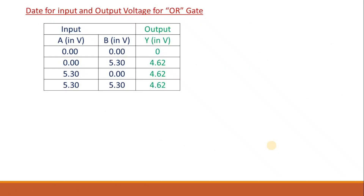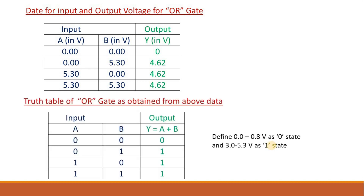This is the data for input and output voltage for the OR gate we have constructed. If we define 0 to 0.8 volts as logic 0 state and 3 volts to maximum as logic 1 state, then by applying this definition we can extract the truth table for the OR gate. The result is: 0,0→0; 0,1→1; 1,0→1; 1,1→1. This is exactly the truth table of an OR gate.